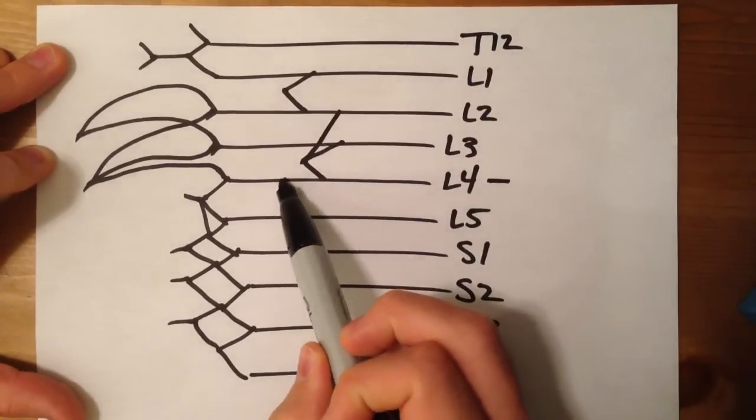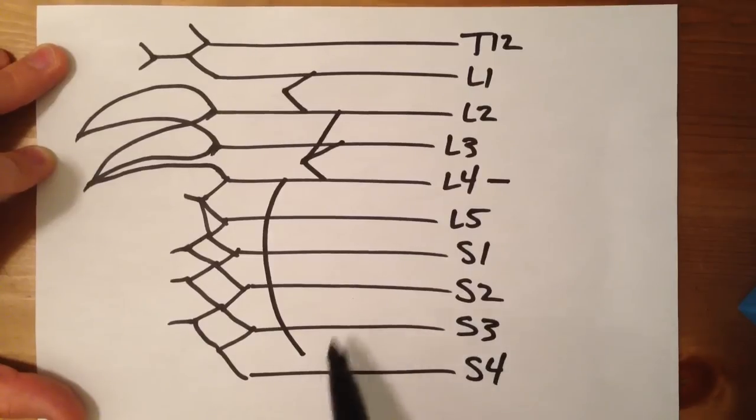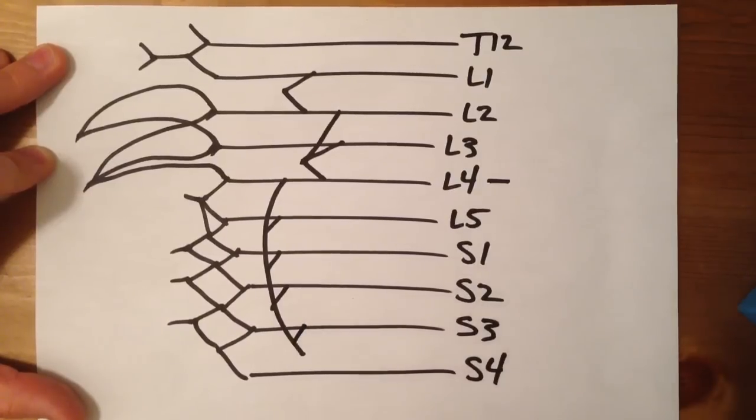From L4, we're going to draw a line down to the S3, S4 space, and we're going to connect L5, S1, S2, and S3 to it.